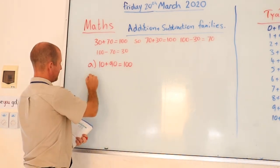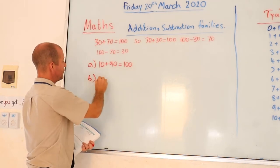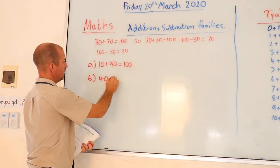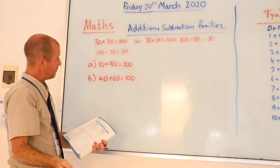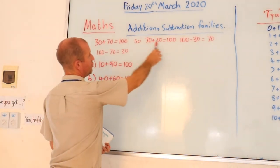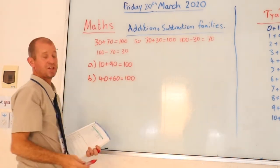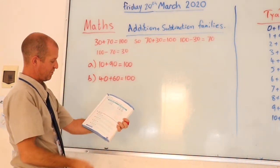And then you have part B, 40 plus 60 is equal to 100. So therefore, you need to write the addition and subtraction family in the spaces provided.